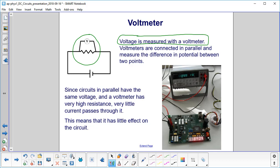Since circuits in parallel have the same voltage, and a voltmeter has a very high resistance, very little current passes through it. So the current coming out of the battery, most of it's going through the resistor, which is what you want it to do, and the voltmeter just takes a little bit out to measure the potential drop.